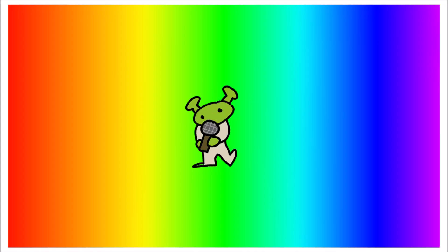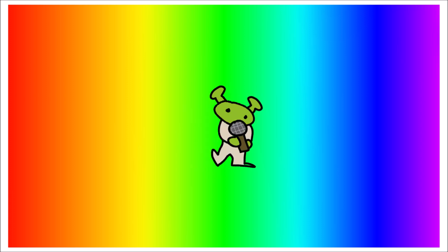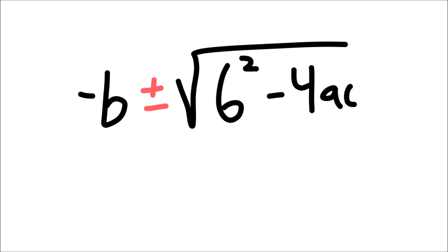You never know if you don't go. You'll never shine if you don't glow. Hey now, it's negative b plus or minus square root of b squared minus 4ac divided by 2a.